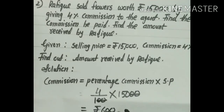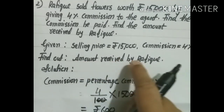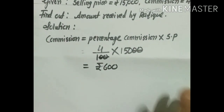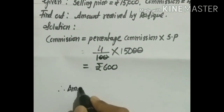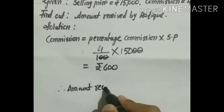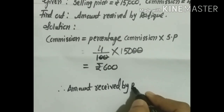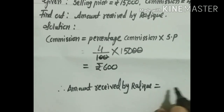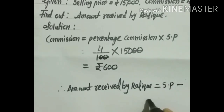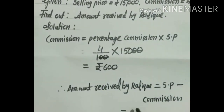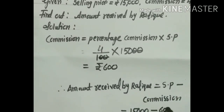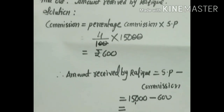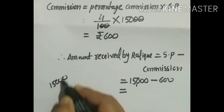Now we find the amount received by Rafik. Amount received by Rafik = SP − Commission = 15,000 − 600. We subtract: 15,000 minus 600. Working through the subtraction, we get 14,400.